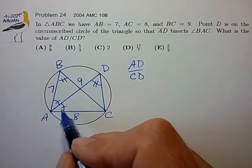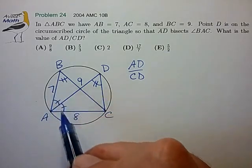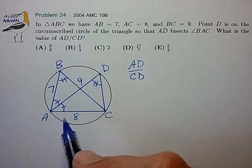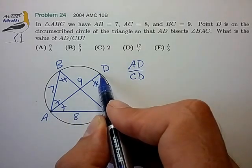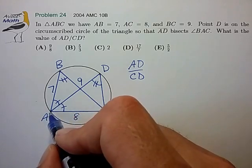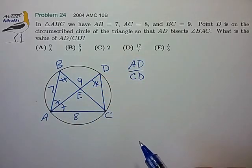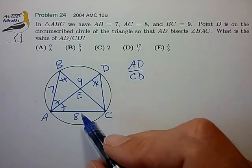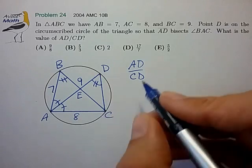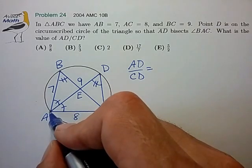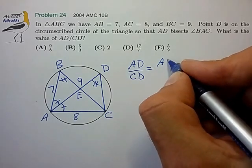And we notice that since we have two pairs of equal angles, we probably have some similar triangles lurking in this figure. And if we look at this figure a little more carefully, we do notice that triangle ACD is similar to triangle ABE. And that makes things a little bit easier now, because instead of trying to find the ratio of AD to DC, we could just as easily find the ratio of AB to BE. And that looks a little bit easier to find.